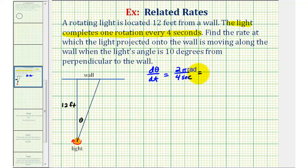We simplify this. Two fourths simplifies to one half, so we'd have pi over two radians per second.